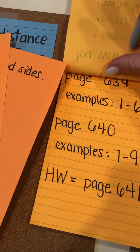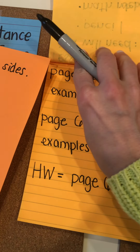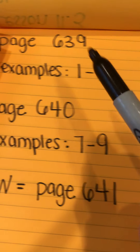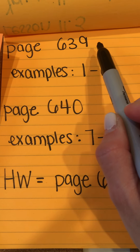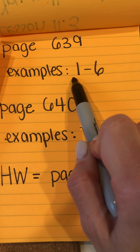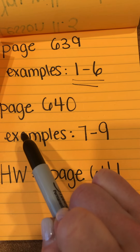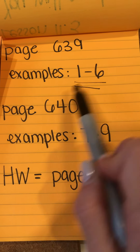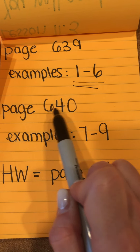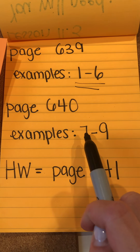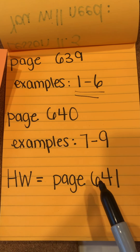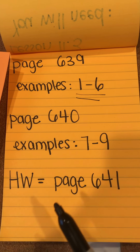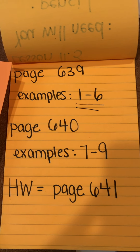Now I would like you to go to page 639 in your math textbook and try examples 1 through 6. Then move on to page 640 and do examples 7 through 9. Your homework will be page 641. Great job, guys. Thank you.